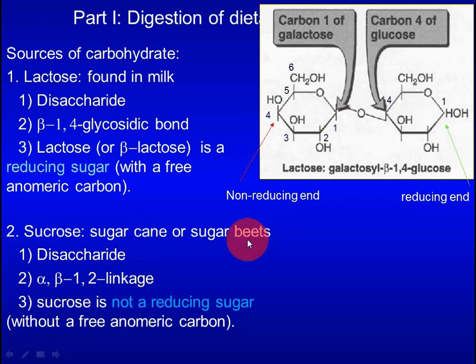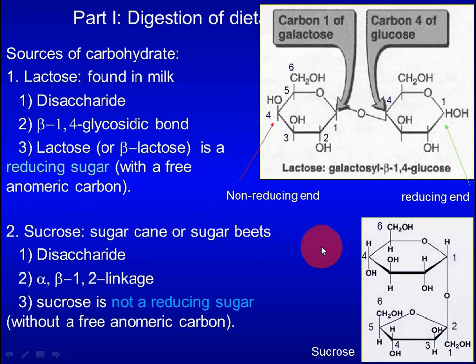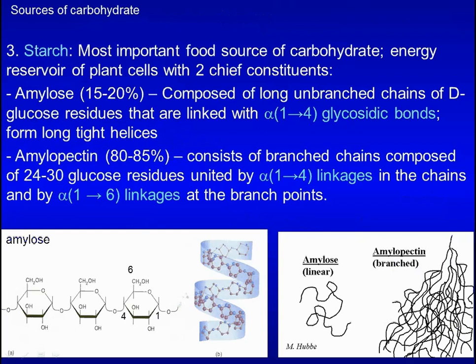Sucrose is found in high amounts in sugar canes or sugar beets. It consists of two monosaccharides — glucose and fructose — joined together by an alpha-beta-1,2 glycosidic bond. Because two anomeric carbons are involved in the glycosidic bond, sucrose is not a reducing sugar.